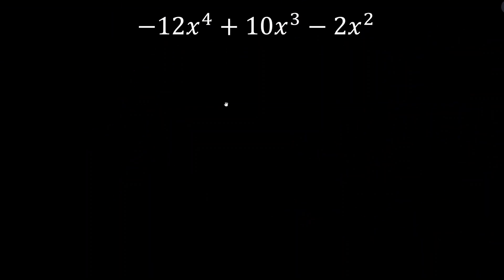Let's jump into the last example. There's a very clear GCF — everything has an x in it, and alarm bells should be ringing. This is x to the fourth, so it's not even a quadratic, but we can factor something out and be left with a quadratic. They all have at least two x's in them and they're all divisible by 2. So the GCF is 2x². But here's a pro tip: the leading coefficient right now is negative, which makes it a lot harder to factor. So instead of taking out 2x², I'm going to take out negative 2x².